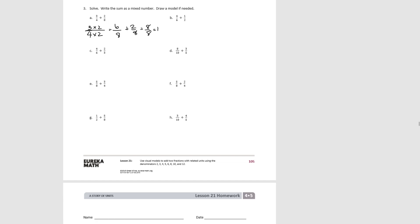Try B. Our denominators are unequal but related — 2 is a factor of 6. Since 2 times 3 is 6, we start with 1/2 and multiply both numerator and denominator by 3 to get 3/6. So 4/6 plus 3/6 equals 7/6, which decomposes into 1 and 1/6 as a mixed number.